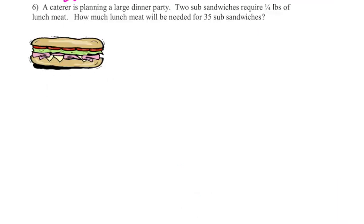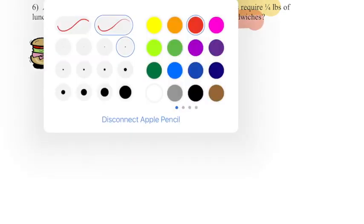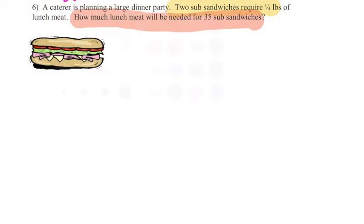All right, we have one more problem that is a word problem that we're going to solve with a proportion. So a caterer is planning a large dinner party. Two subs require a quarter of a pound of lunch meat. How much lunch meat will be needed for 35 subs? So we're going to just keep this with the units that are presented. Two subs is attached to a quarter pound of meat.